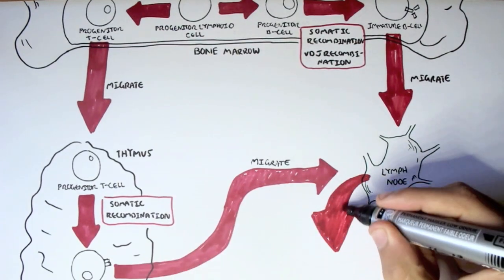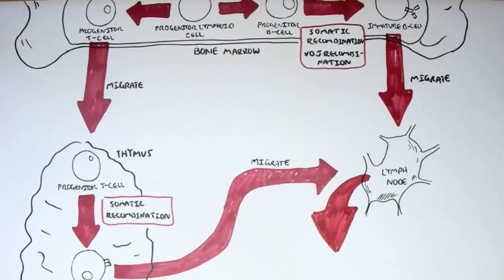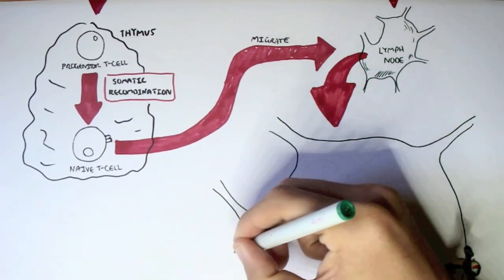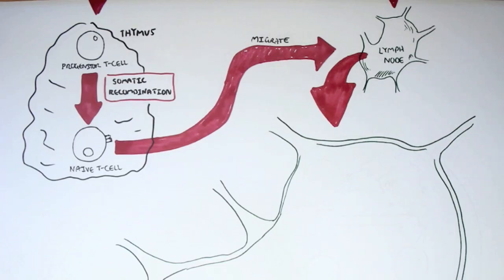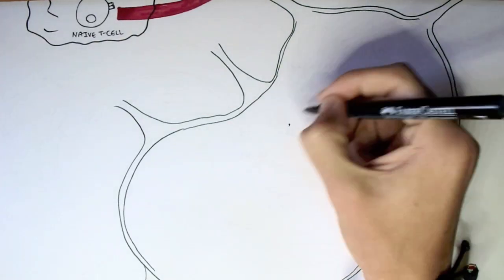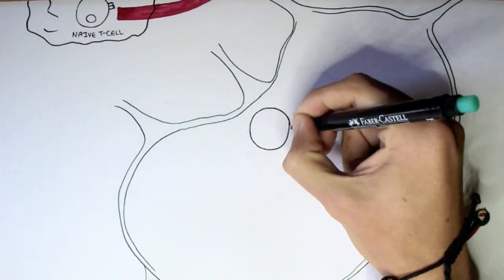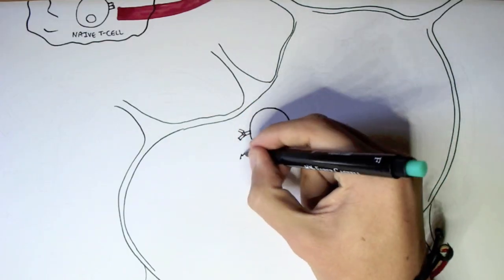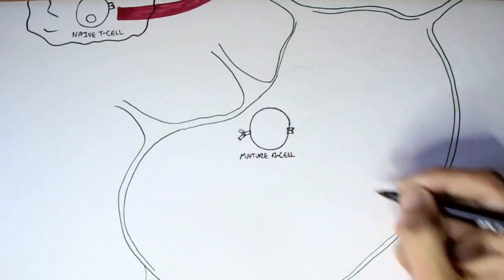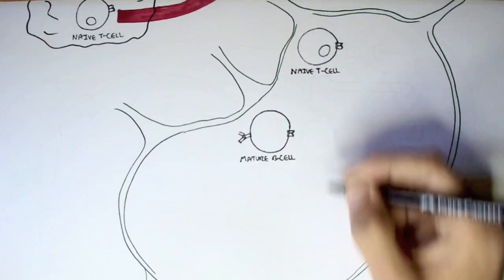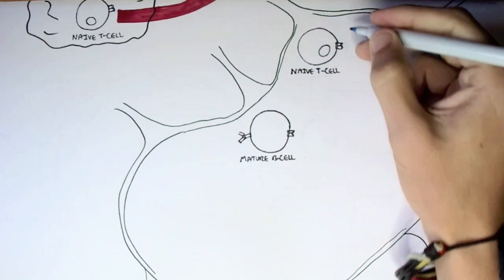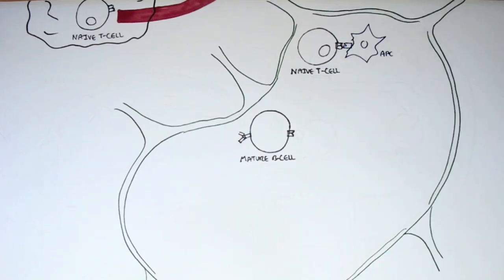Once this immature B-cell has developed with immunoglobulin M, it will migrate into the lymph nodes — so both the naive T-cell and the immature B-cell are in the lymph nodes. Inside the lymph nodes, the immature B-cell has matured into a mature B-cell. We also have the naive T-cell present.